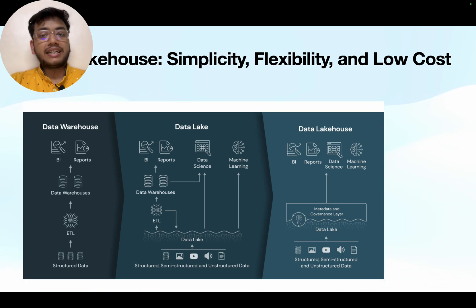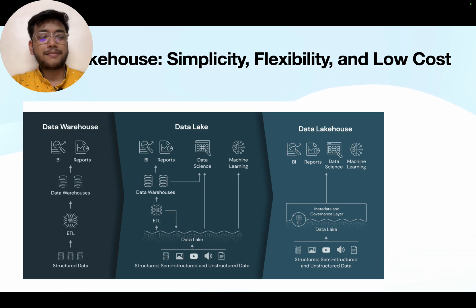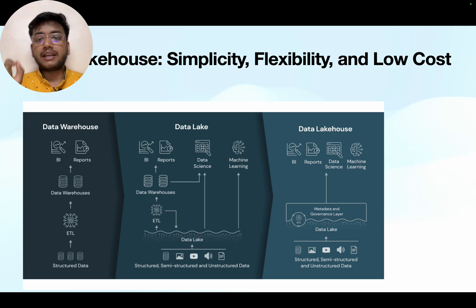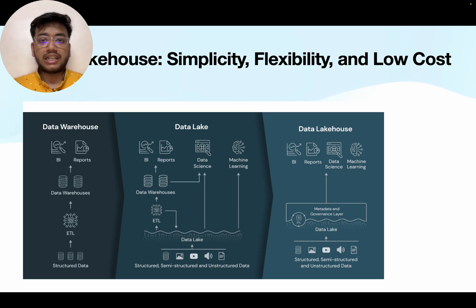That is why we are now building data lakehouses. You must have heard names like Delta Lake, Delta tables, Apache Hoodie, and Apache Iceberg — all of these are metadata layers. Generally in Databricks you use Delta tables, but we can also create Apache Hoodie tables or Apache Iceberg tables on top of the data lake. In the data lakehouse, a metadata and governance layer is added. Governance means we can do masking on a table, put row-level filters, and so on.